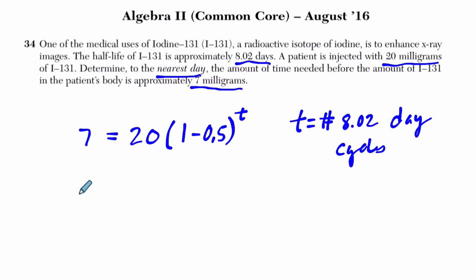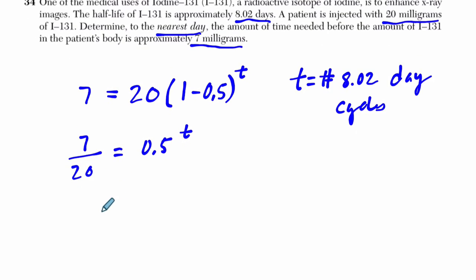I can say that if I specify what I'm doing here, T is the number of 8.02 day cycles. So if you solve this, you divide both sides by 20. You get 7 over 20 equals 0.5 to the T. And now you've got to solve for T in some way. What I might do to solve this is use a logarithm.